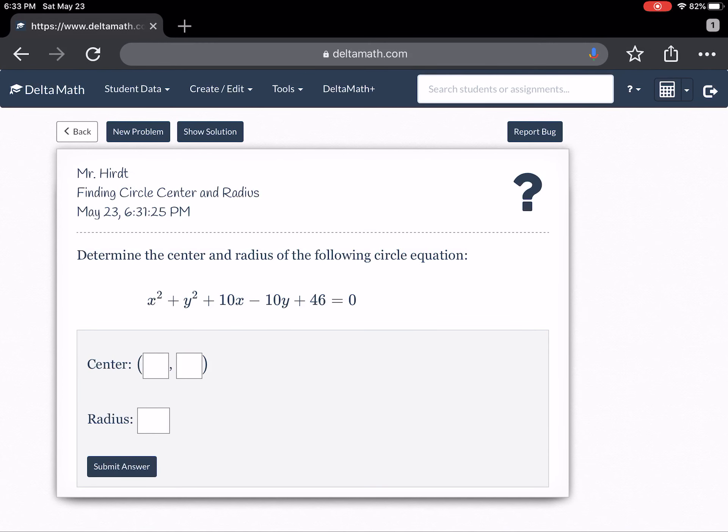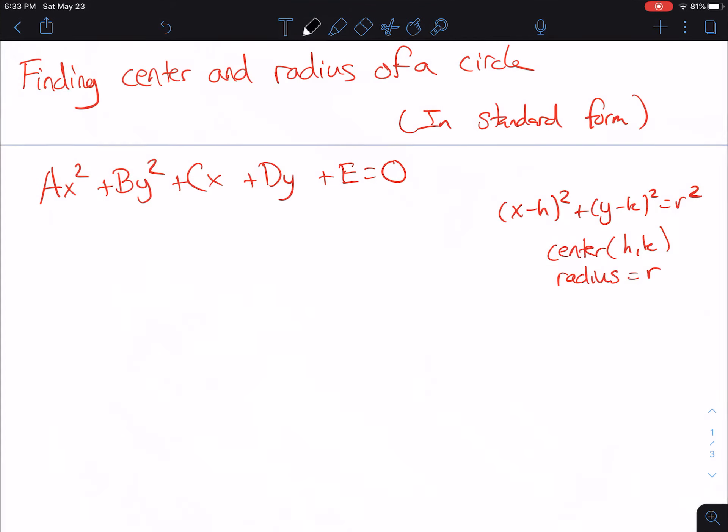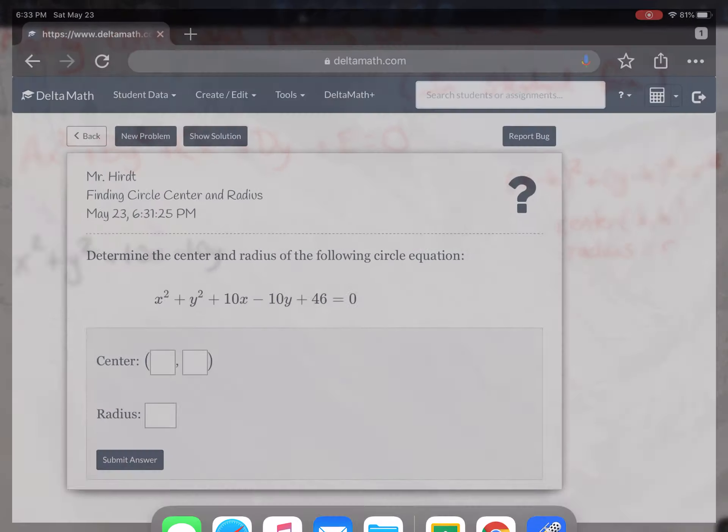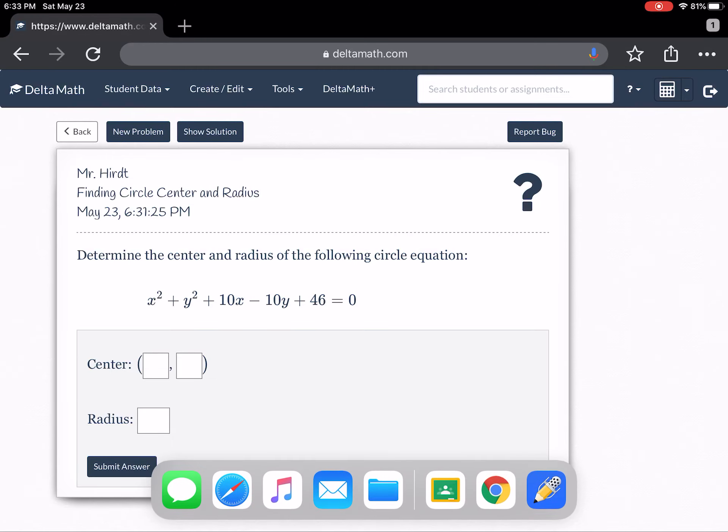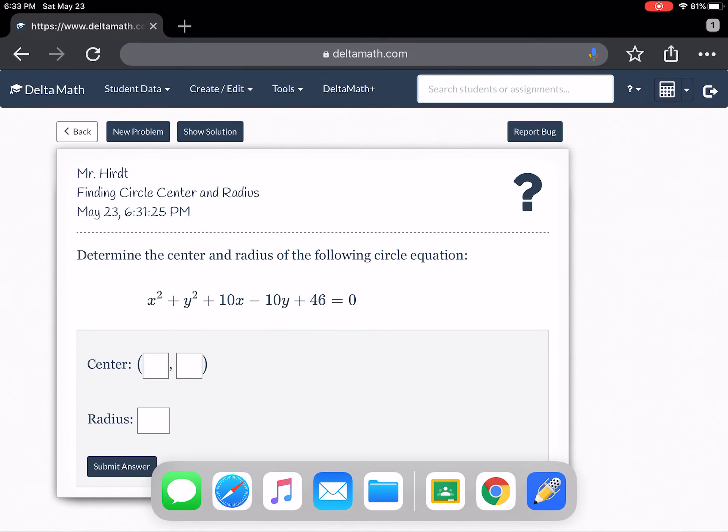So here is our equation, x squared plus y squared plus 10x minus 10y plus 46. Let's just make sure we have everything.